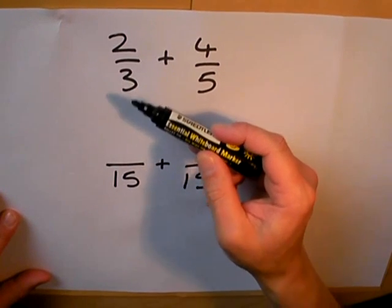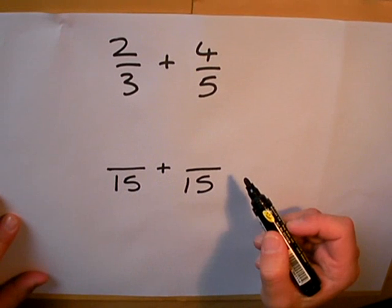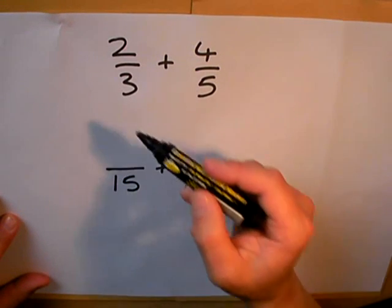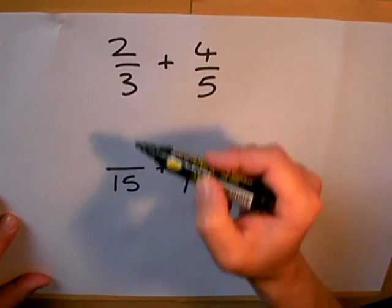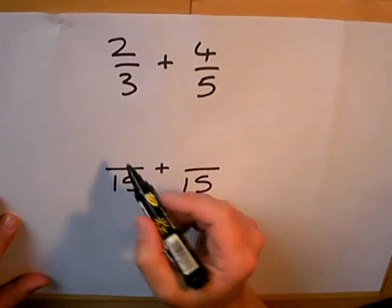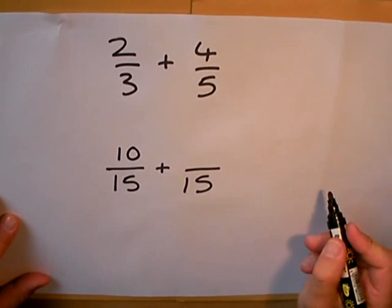I turn this first fraction into 15 by multiplying by 5, so if I multiply the bottom number by 5 I must multiply the top number by 5 as well. 2 times 5 is 10.